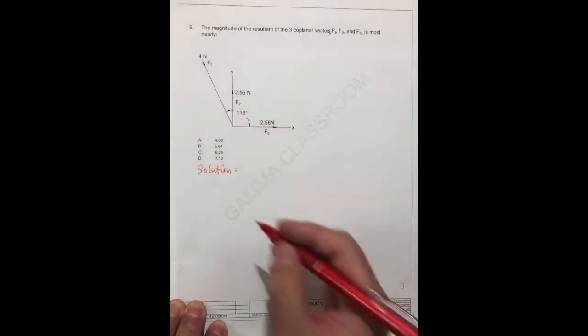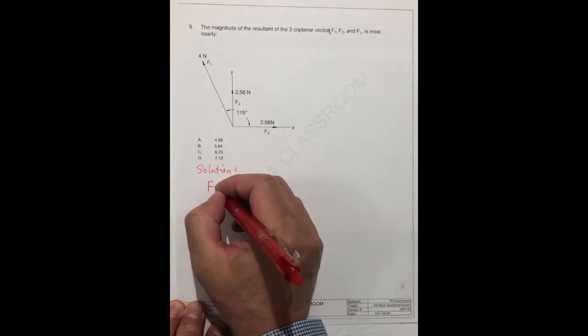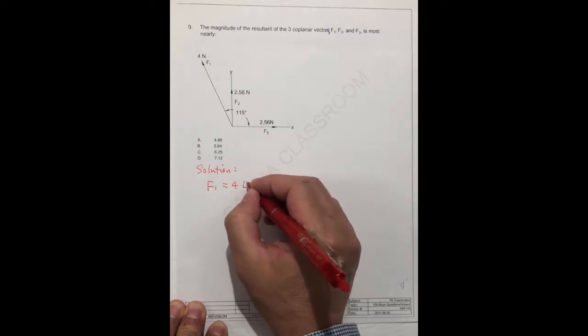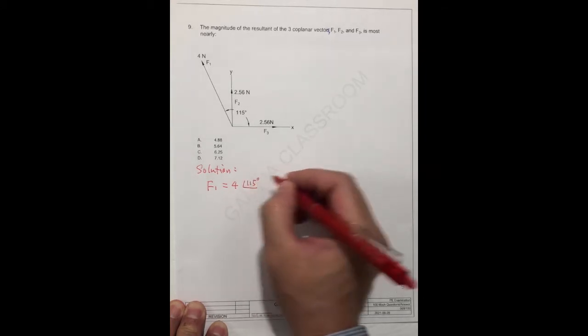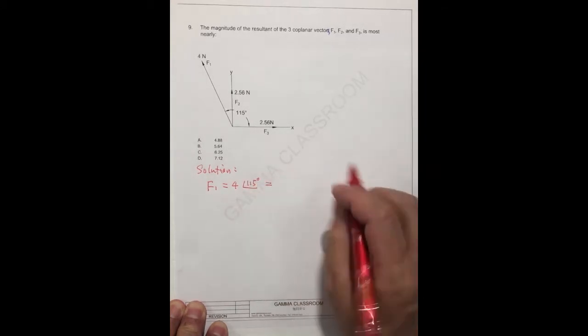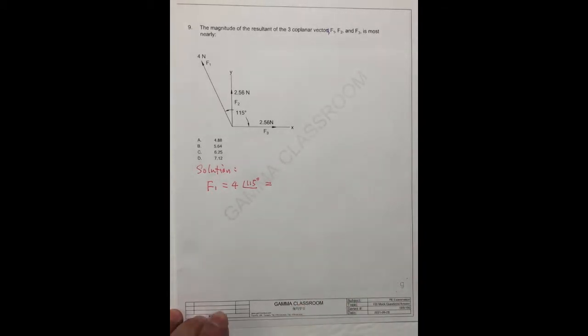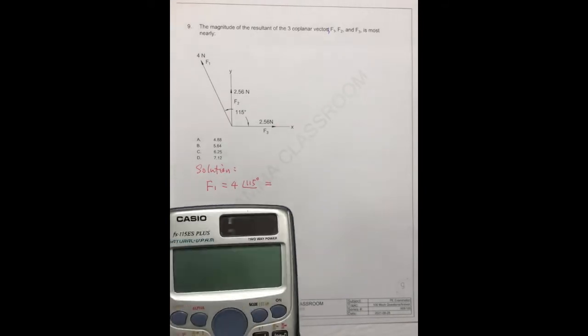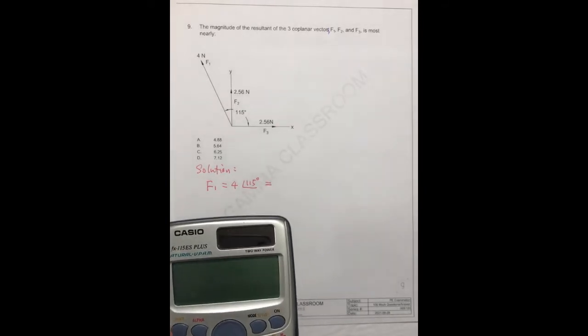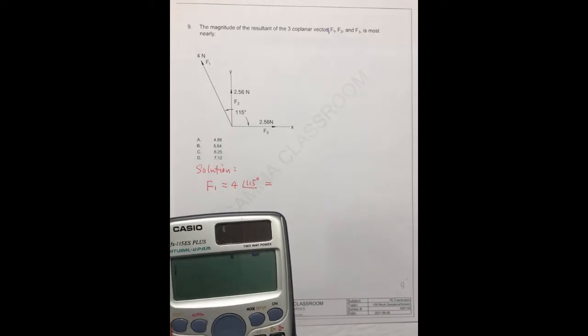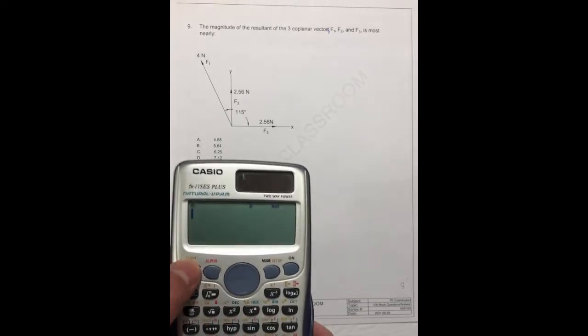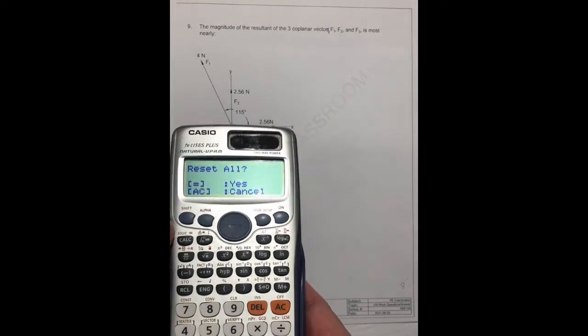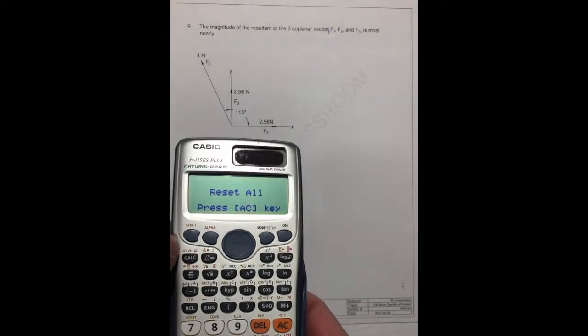For the solution, the first one should get F1 is equal to 4N, the angle is 115. We can use the calculator to get the answer quickly. This is the Casio FX-115 ES Plus calculator. Turn on the power. First of all, you have to clear all the memory.